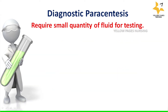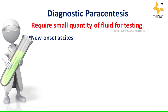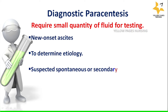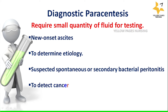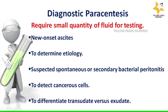Diagnostic paracentesis requires only a small quantity of fluid for testing. The purposes may be to find out new onset of ascites, to determine etiology of any condition, if there is any suspected spontaneous or secondary bacterial peritonitis, to detect cancerous cells, and to differentiate transudate versus exudate.